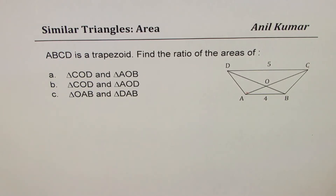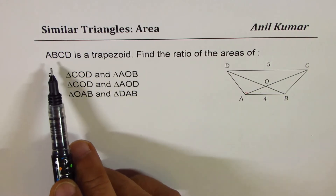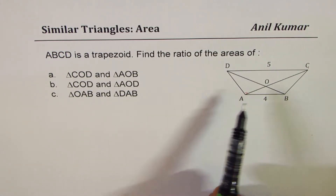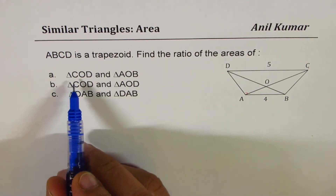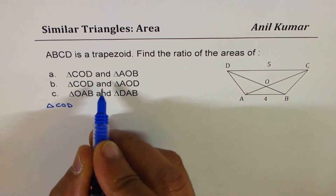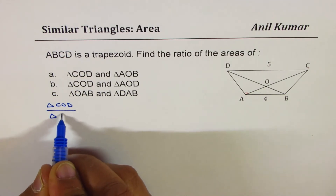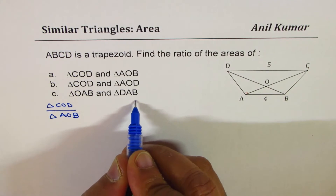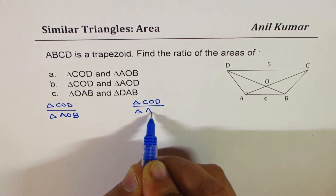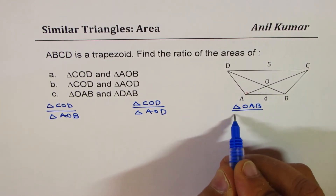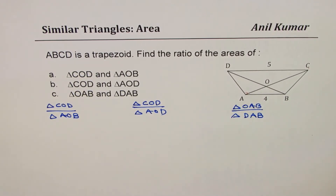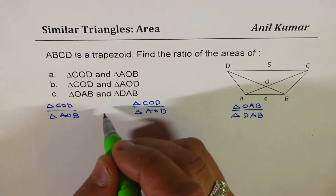Let me go through the concept for similar questions, which should help you answer all questions like this. I've made a general question covering three different cases, with ABCD as a trapezoid. Case A compares triangle COD and triangle AOB. Case B compares triangle COD with triangle AOD. The last case compares triangle OAB with triangle DAB.